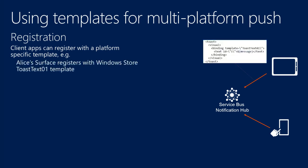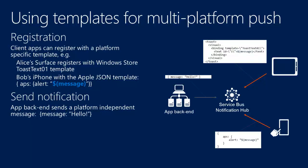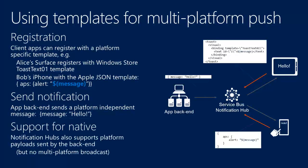You can do templates for multi-platform push. If you want a toast notification on a Windows app, you do a template registration. If you want a badge on Apple, you do a different template registration — both native to each platform. The key part is that the send message has nothing specific to the platform — it just says 'anywhere you find the key message, replace it with hello.' In one case it will do the toast, in the other the badge. It also supports native payloads where you can send direct messages to your app. So you don't compromise on any power — you only get ease and simplicity.